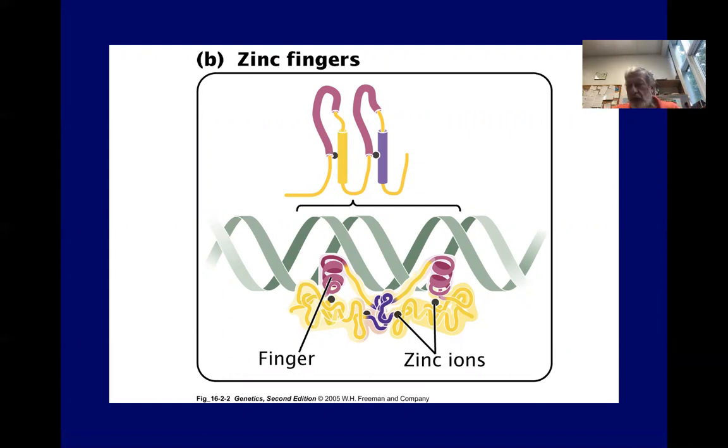And then below that, it shows how this zinc finger motif actually physically interacts with the DNA. And so we think this can be an important process in transcriptional control of gene expression of prokaryotes.